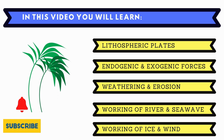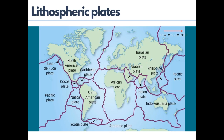First, let's see what is a lithospheric plate. The Earth's lithosphere, that is Earth's crust, is broken into several pieces. We call these pieces lithospheric plates. We can also call them tectonic plates. The plates are like large slabs that have an irregular shape, and they comprise both continental and oceanic crust portions of Earth.